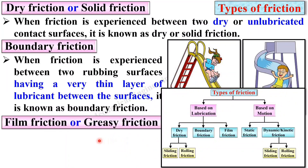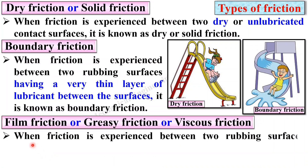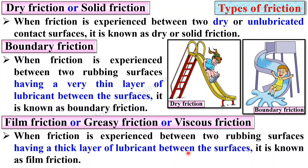Next, film friction, also known as greasy friction or viscous friction. When friction is experienced between two rubbing surfaces having a thick layer of lubricant between them, it is known as film friction. In boundary friction there is a very thin layer; in film friction there is a thick layer; and in dry friction there is no layer — meaning dry contact between the surfaces.